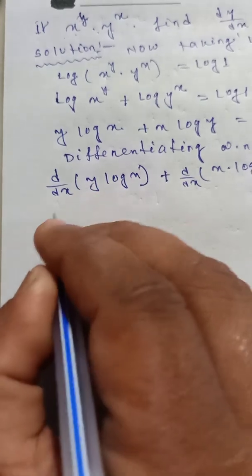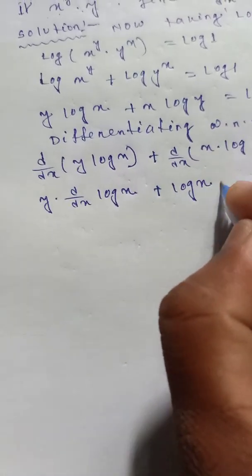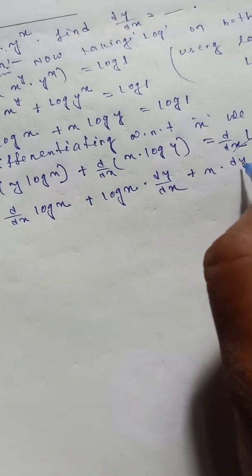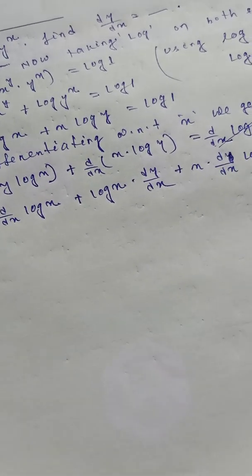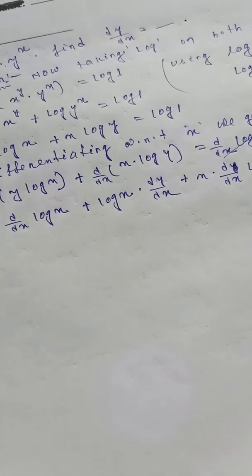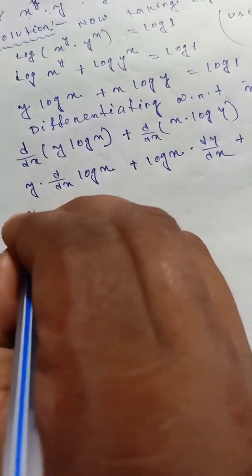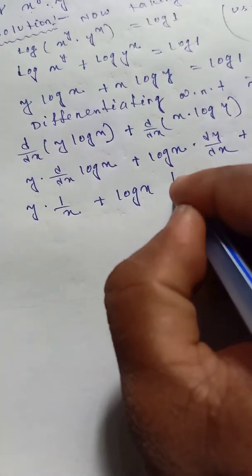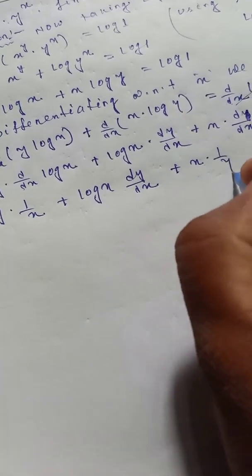Applying the product rule: y is treated as a function, so d/dx of log x gives 1/x, plus log x times dy/dx. Then for x·log y: x times d/dx of log y gives (x/y)·dy/dx, plus log y times d/dx of x, which is 1.